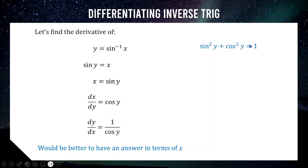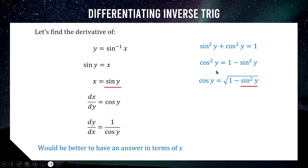We use the Pythagorean identity: sine squared plus cos squared equals 1. Rearranging gives cos squared y equals 1 minus sine squared y, so cos y equals the square root of 1 minus sine squared y. Since sine y equals x from our starting equation, we substitute to get cos y equals the square root of 1 minus x squared. Substituting into our derivative gives dy/dx equals 1 over the square root of 1 minus x squared.